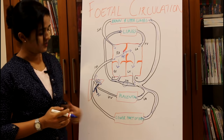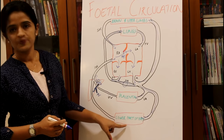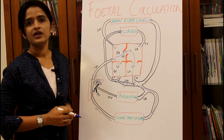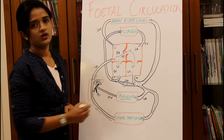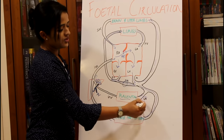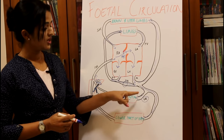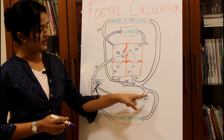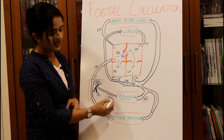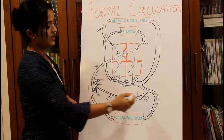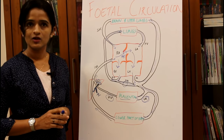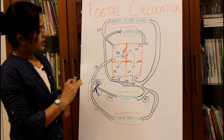After supplying the lower part of the body, impure blood is carried through the inferior vena cava back to the right atrium. Oxygenation and deoxygenation of blood occurs at the level of the placenta. The two umbilical arteries are branches of the internal iliac artery, which is a branch of the aorta. So the umbilical vein carries oxygenated blood while the umbilical arteries carry deoxygenated blood — the opposite of the adult pattern.